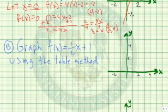Let's look at a different method. Suppose we want to graph f of x equal 1 half x plus 1 using the table method. The table method means we simply select values of x, calculate the values of f of x.